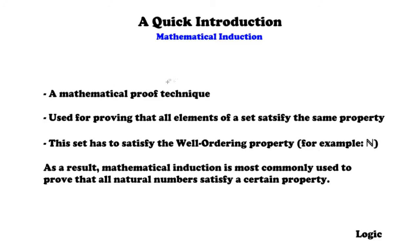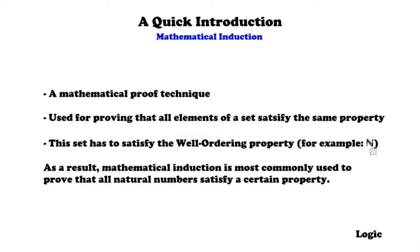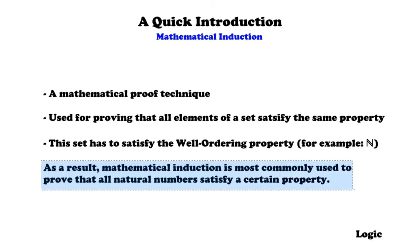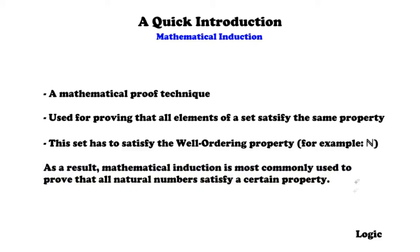Mathematical induction is a mathematical proof technique. It is used for proving that all elements of a set satisfy the same property, and this property can literally be anything. The only restriction is on the set — it has to satisfy the well-ordering property. An example of such a set is ℕ, the set of natural numbers. As a result, mathematical induction is most commonly used to prove that all natural numbers satisfy a certain property.